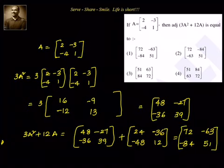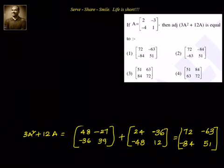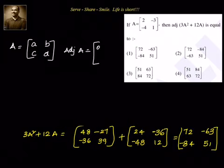Now this is what we got for 3A² plus 12A. What we need is adjoint of 3A² plus 12A. Let's do that. We know that if A equal to 2 by 2 matrix with the elements [[a, b], [c, d]], then adjoint of A is equal to [[d, -b], [-c, a]]. So a and d will switch, and b and c will have sign change. The same logic we can apply for adjoint of 3A² plus 12A.